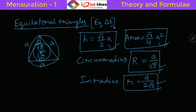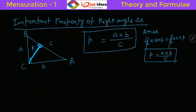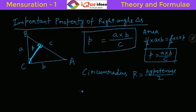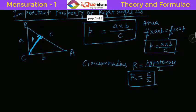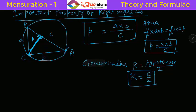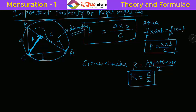There is one more thing to complete for the right angle triangle: the circumradius. For a right angle triangle, the circumradius is simply equal to half of the hypotenuse — that is, C divided by 2. In other words, in a right angle triangle the hypotenuse becomes the diameter of the circumscribed circle, so the radius is half of that length.